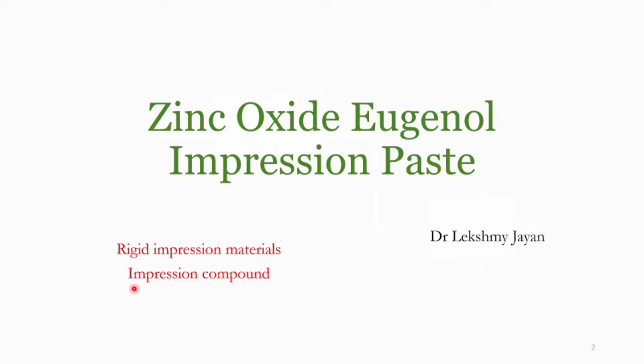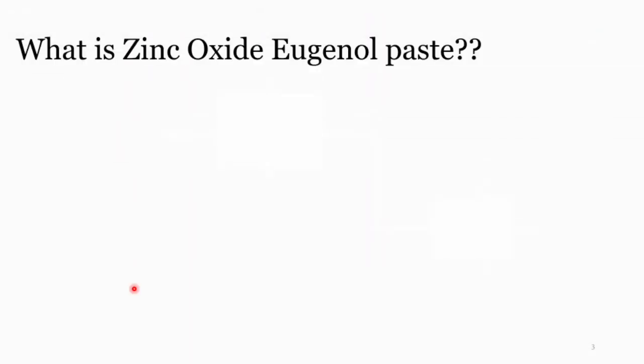Zinc oxide and eugenol are two materials widely used in dentistry. In powder form they're used as temporary restorative material for caries excavated teeth or root canal therapy. In paste form, which is today's topic, it's most commonly used as an impression material especially in edentulous mouths. This is a rigid and irreversible impression material, unlike agar.